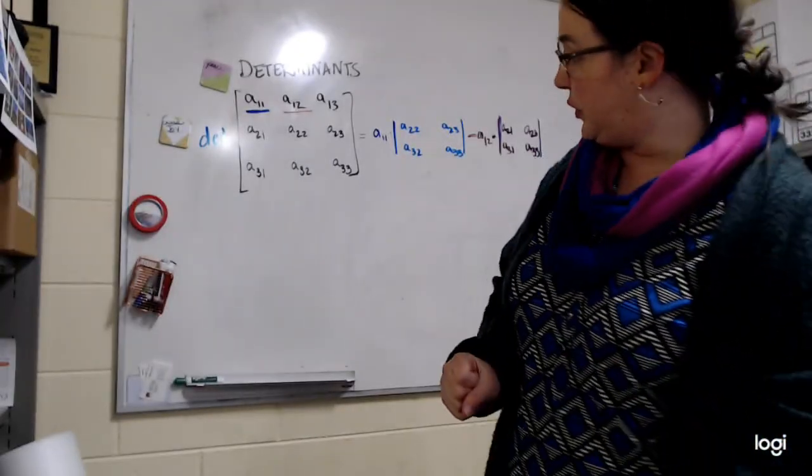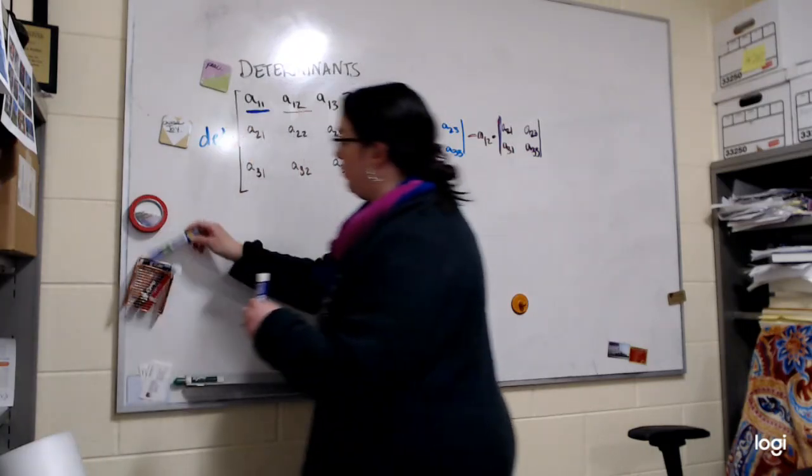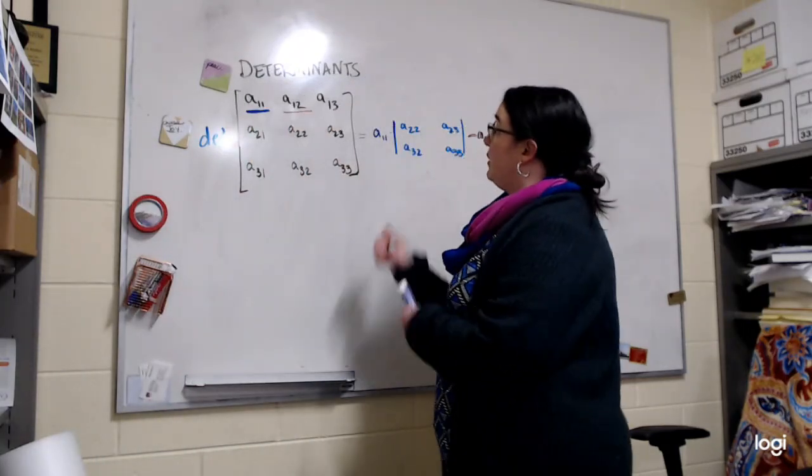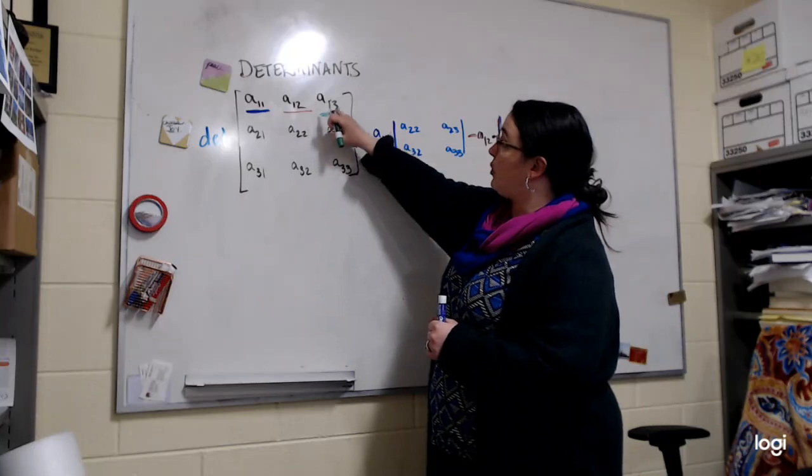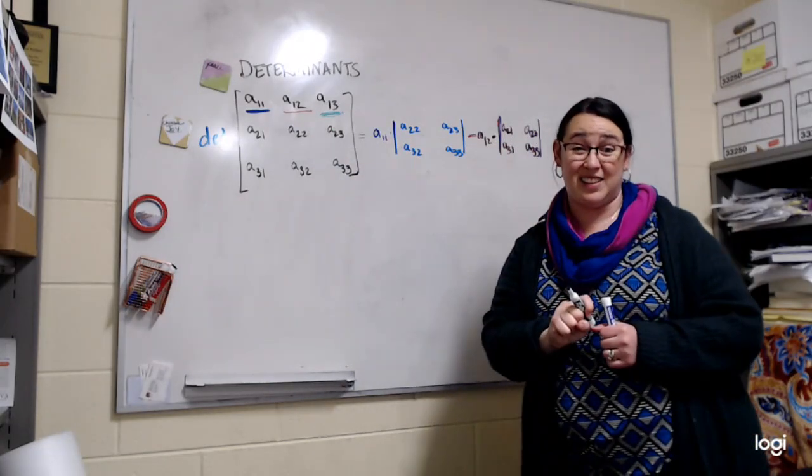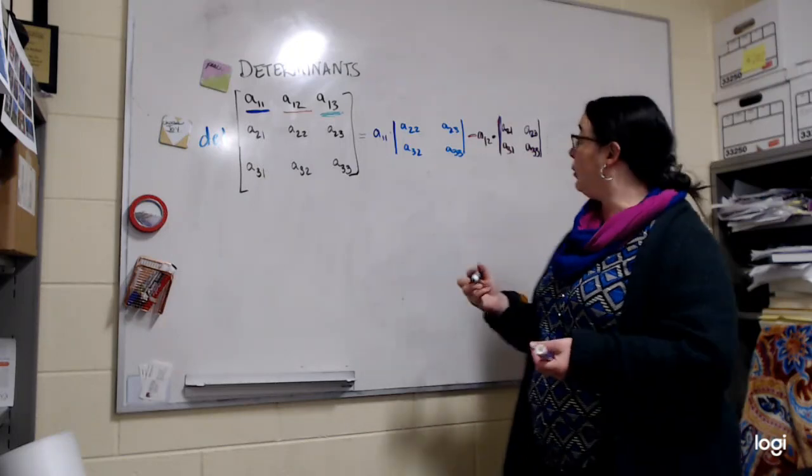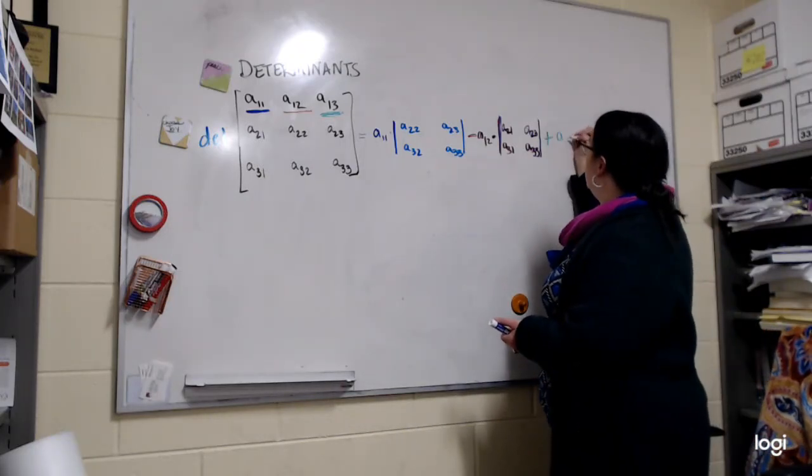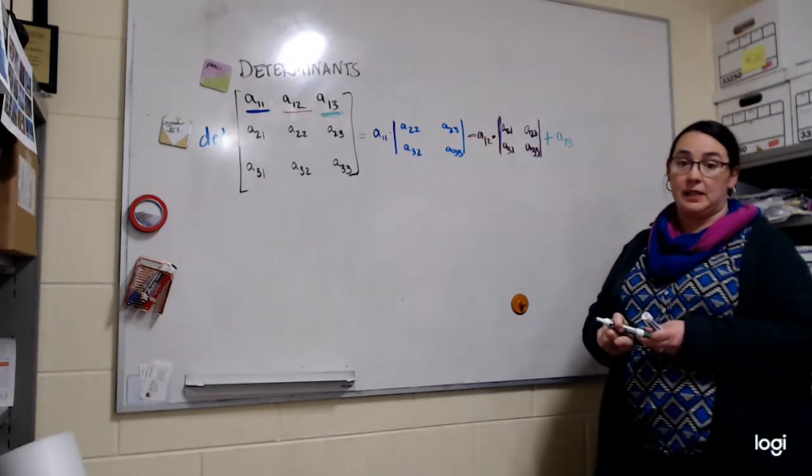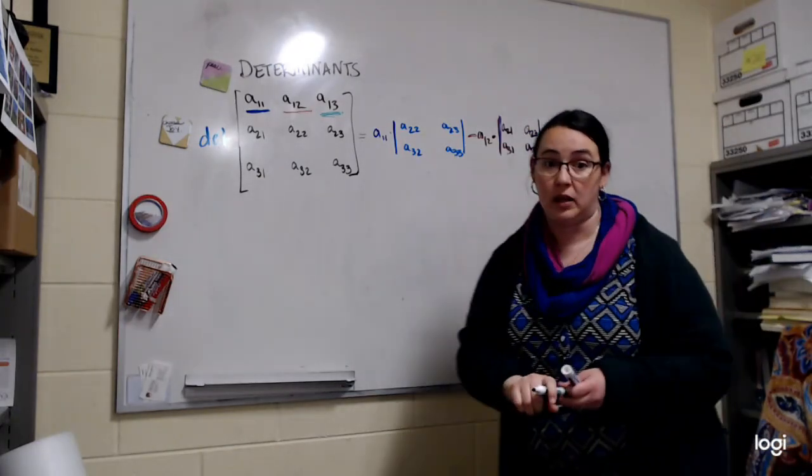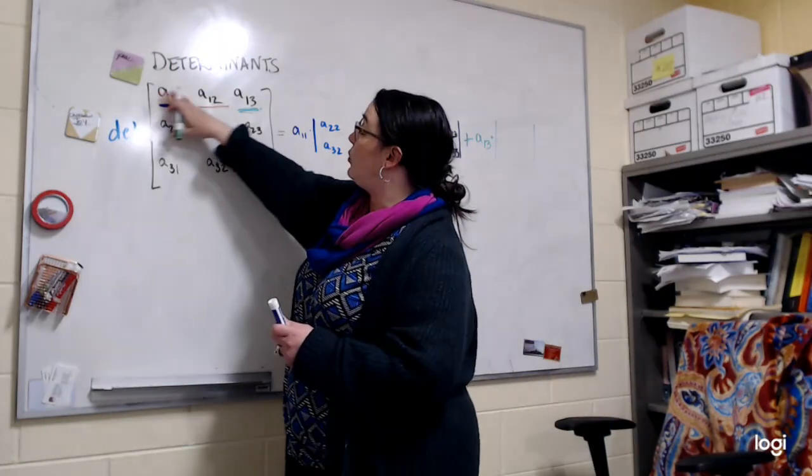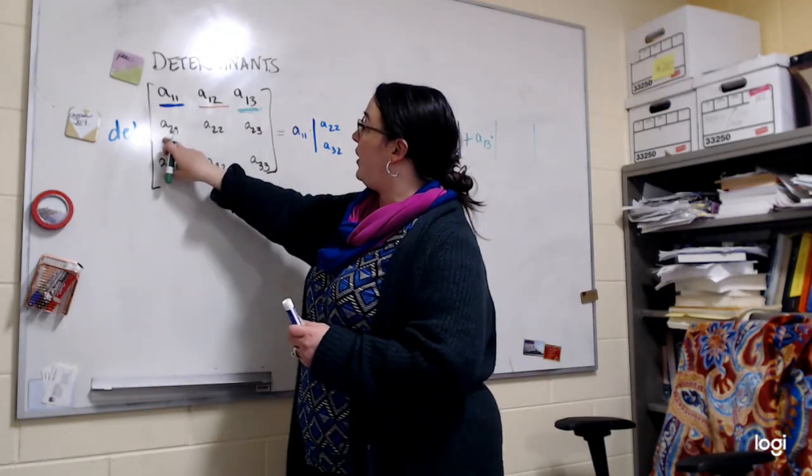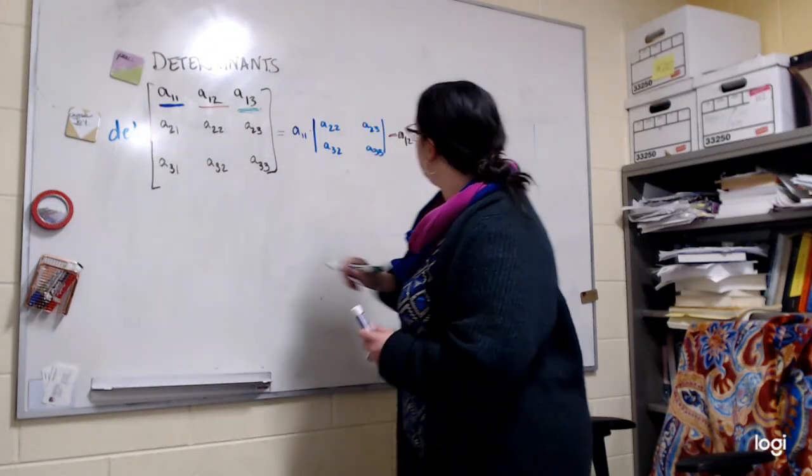And then the last one I'll do with a color that may or may not hold enough. I'm going to take the third element, which is A13. And again, I look at the first row, third column, one plus three is an even number. So it would be negative one to an even power allows me to add. So A13 times the determinant of a submatrix. So I rule out that row and that column, A21, A22, A31, A32, is the matrix.